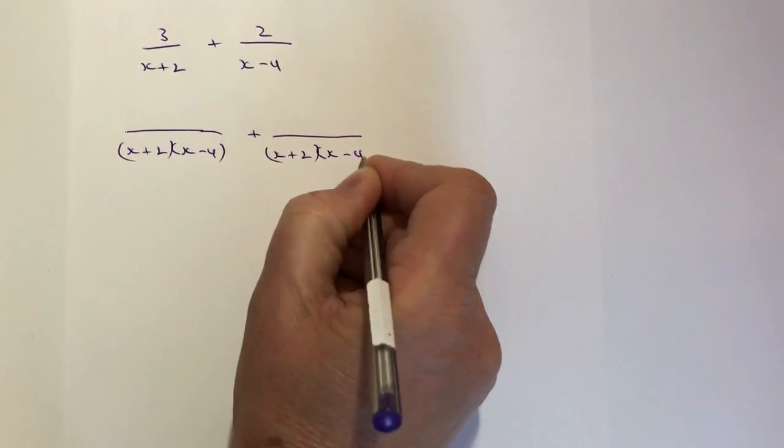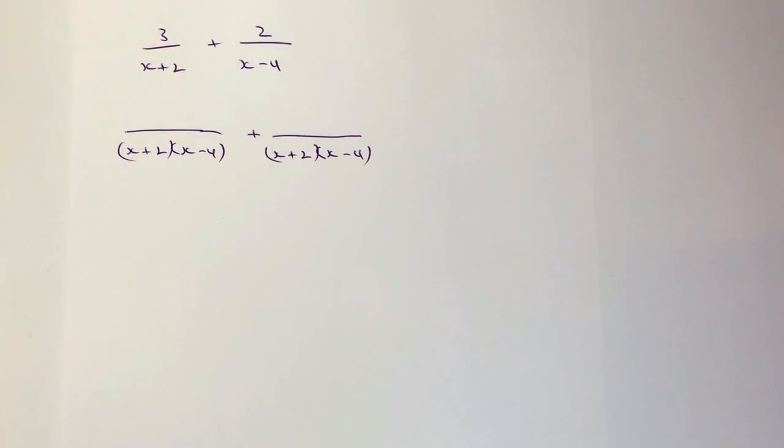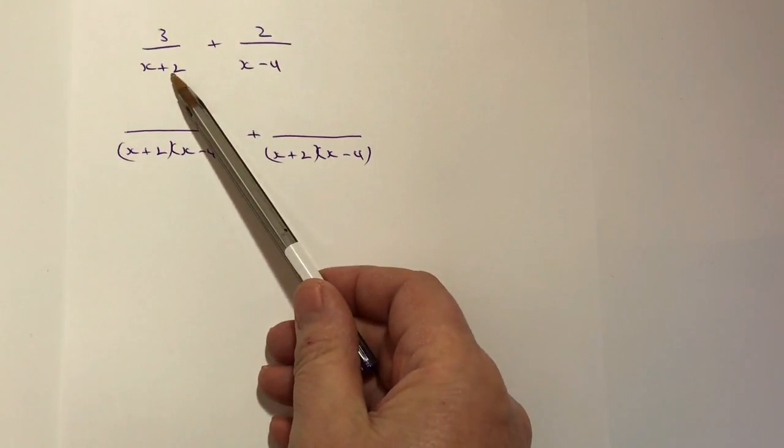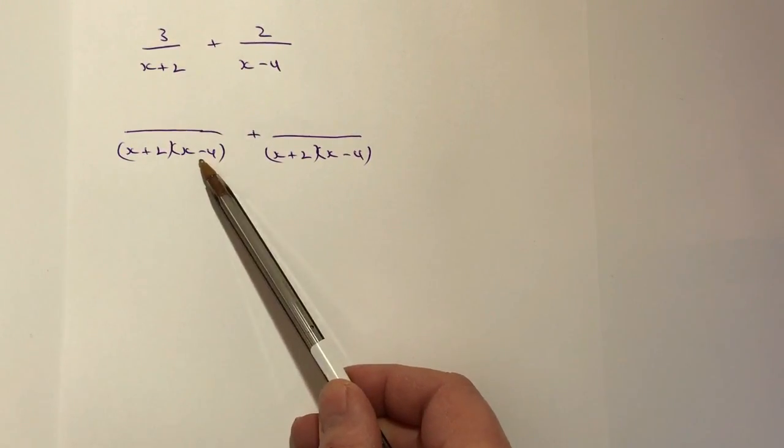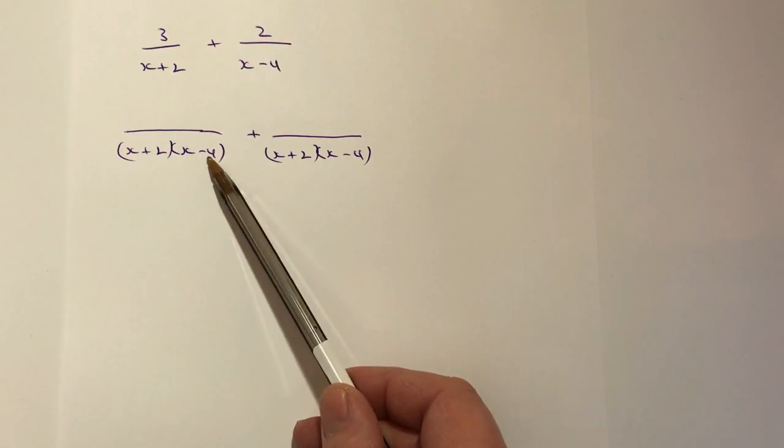Then it's a case of working out what have I multiplied (x+2) by to get this at the bottom. Well, it's going to be (x-4), so I would multiply the numerator by (x-4).